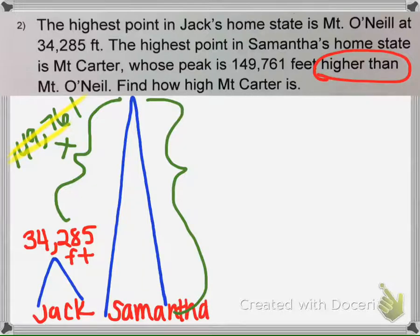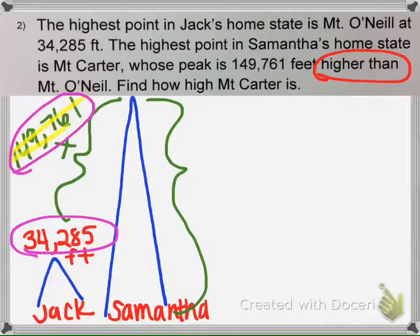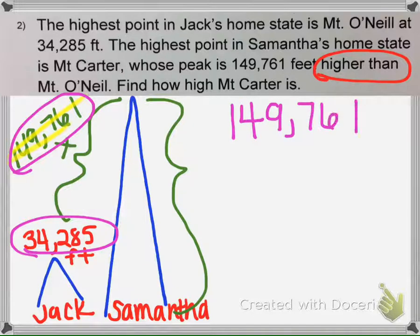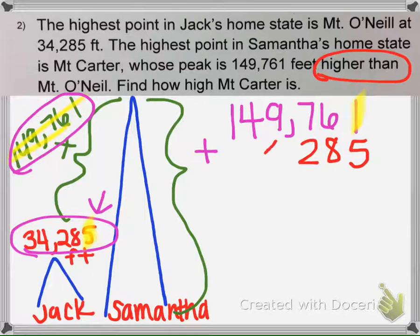To find the total, total means add. So we're going to take Mount O'Neill's height and add on the extra to find how tall Samantha's home state mountain is. It doesn't matter which number goes first because of the commutative property. So I'm going to take 149,761 and add that to the 34,285. I have to make sure that the 5 lines up at the far right.